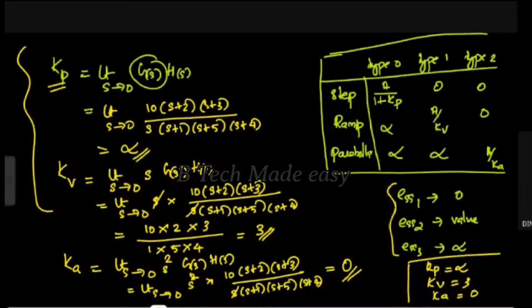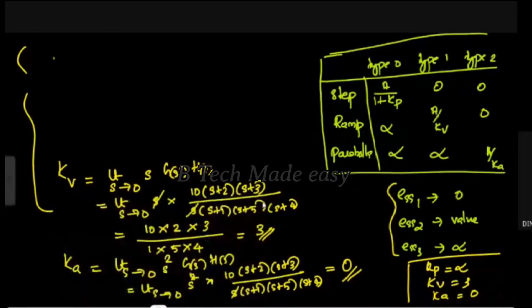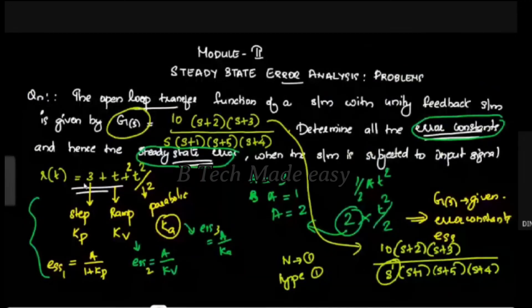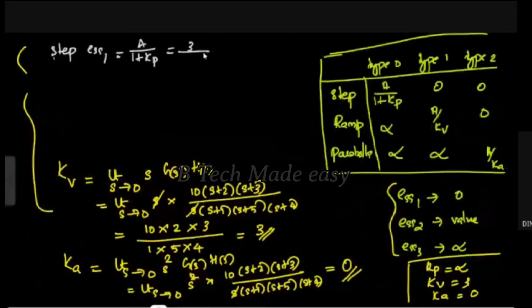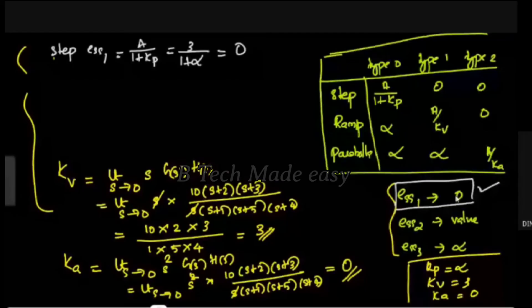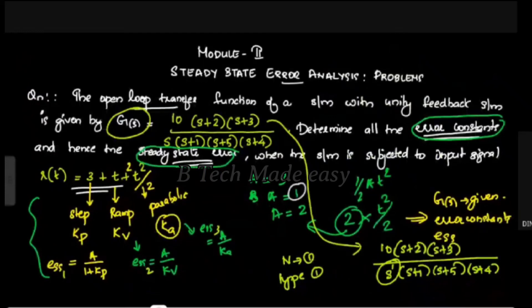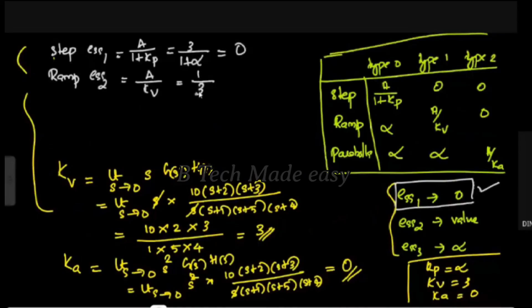Now we find the steady-state errors. ESS1 (step input) = A / (1 + Kp) = 3 / (1 + infinity) = 3/infinity = 0. ESS2 (ramp input) = A / Kv. The value of A is 1, so ESS2 = 1/Kv = 1/3 = 0.33.